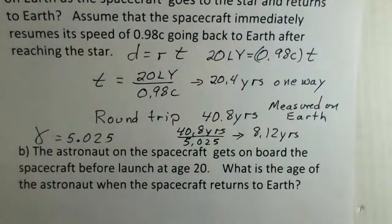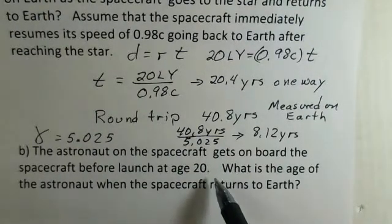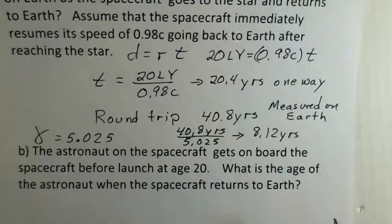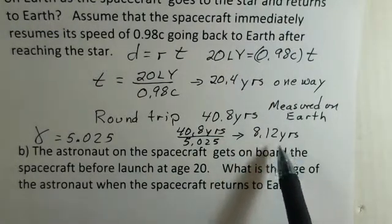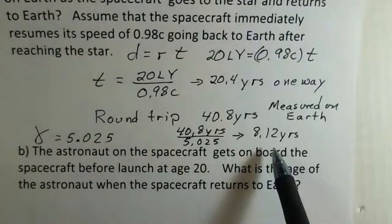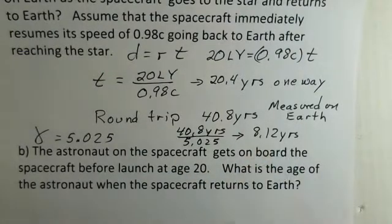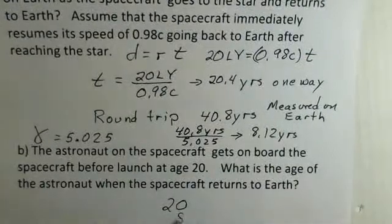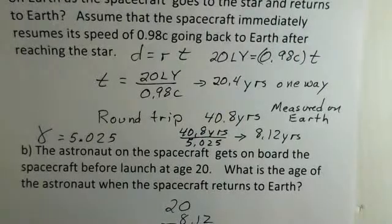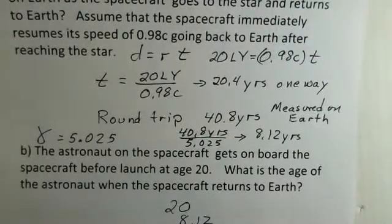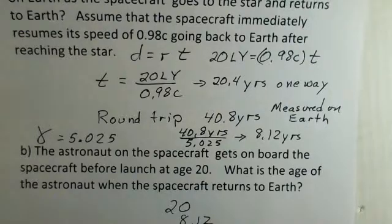So that brings us to our next question here. So this astronaut signs up for this trip at age 20, gets on. What's the age of the astronaut when the spacecraft returns to Earth? Well, we would use how much time has elapsed on the moving clock, the moving astronaut. It's 8.12 years for the clock. It's also 8.12 years of biological activity for the astronaut. So we started at age 20. We've got a travel time calculated on the Earth of 28.12 years. That's the age of the person. A little bit over 28 years old.